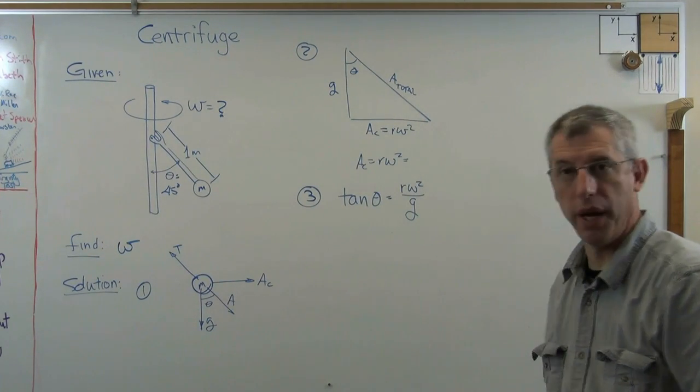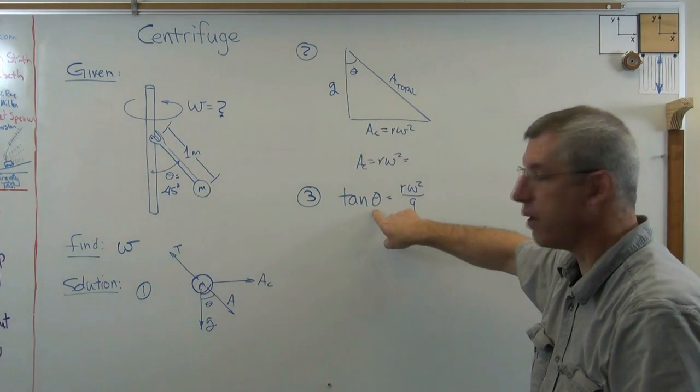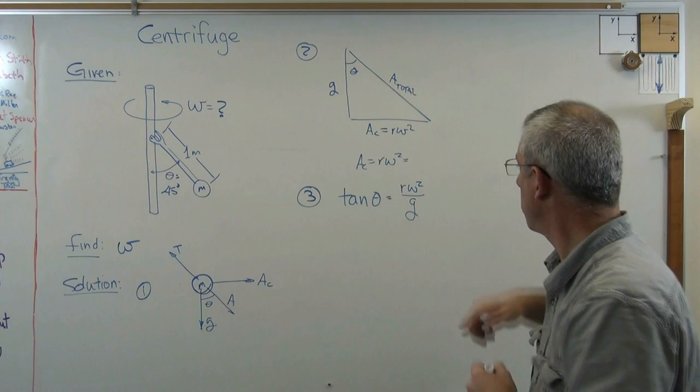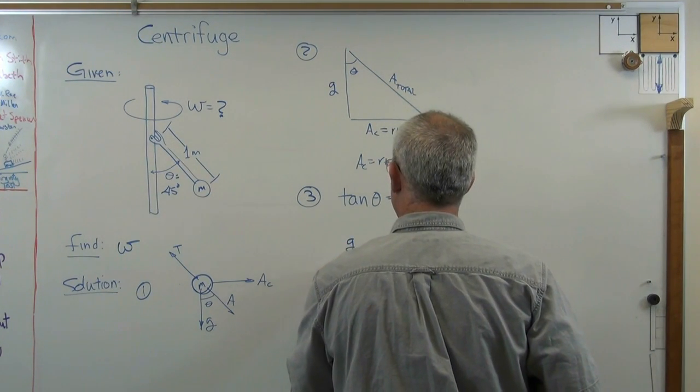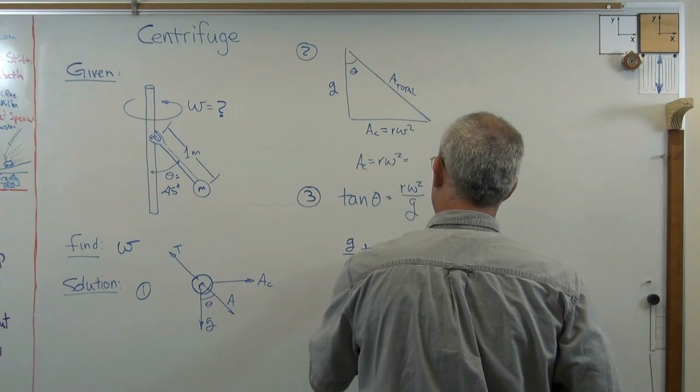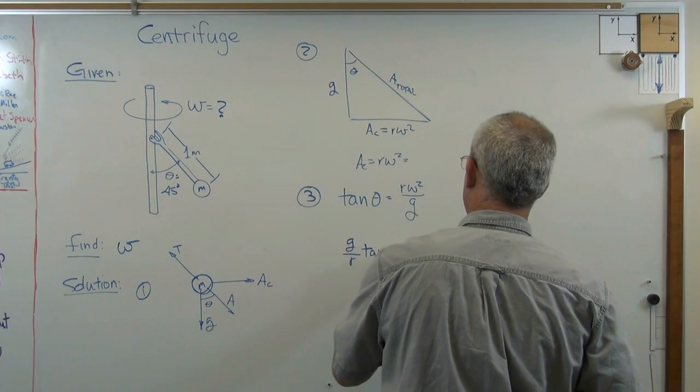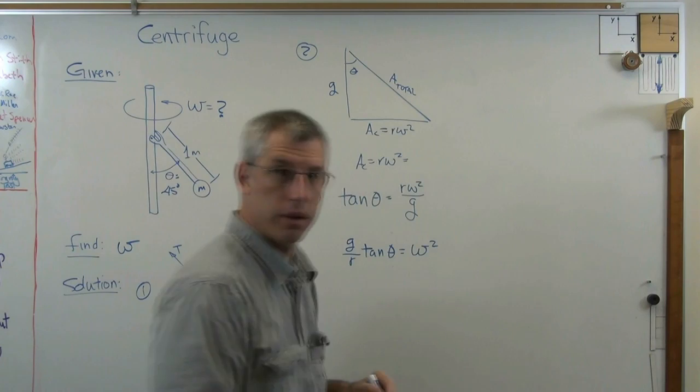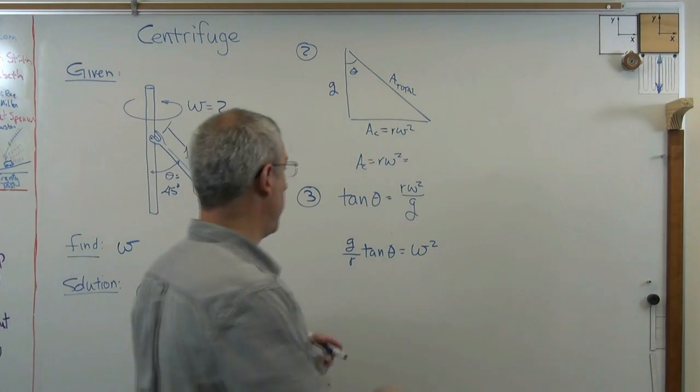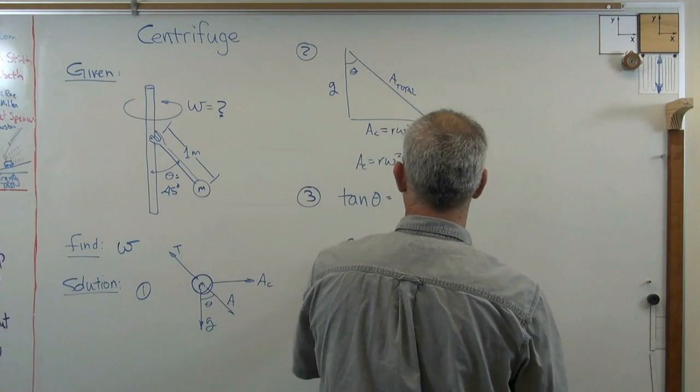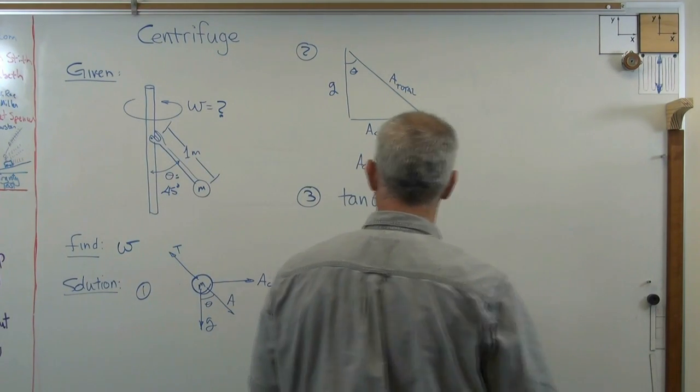This changes the problem just a little bit. All I've got to do now is instead of solving this for theta, I'm going to solve it for omega. So I get to write, let's see, g over r tangent theta equals omega squared. Okay. Or if I want to get rid of the square, I can take the square root of both sides and do that.